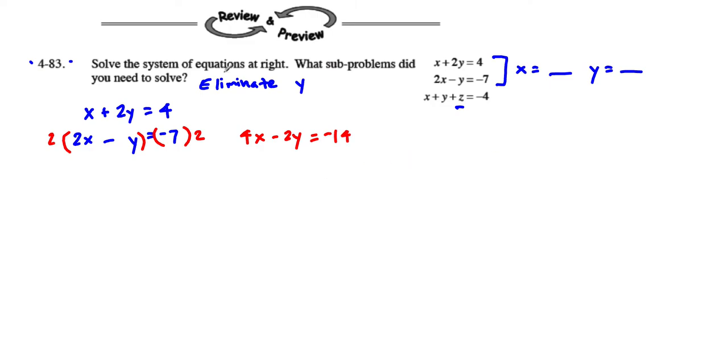And I'm going to just recopy my first one over here. So I'm going to have x plus 2y is equal to 4. But now I can take them and add them. Remember the whole reason I multiplied by 2 is so that I had this right here. These are additive inverses. They're going to cancel out. So we're going to have x plus 4x is going to give us 5x and 4 plus negative 14.